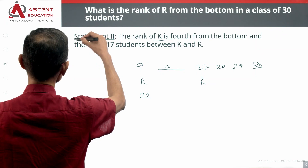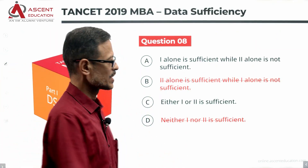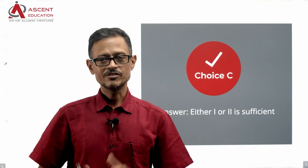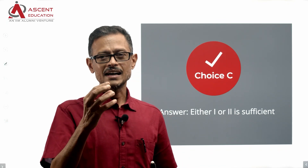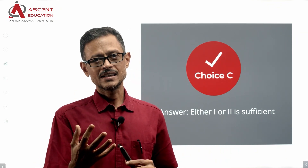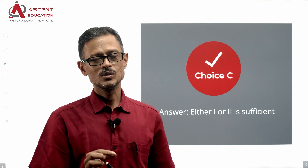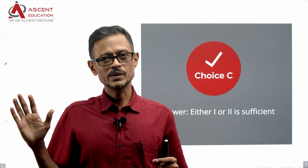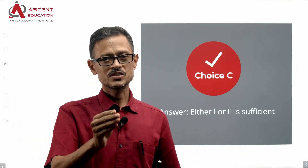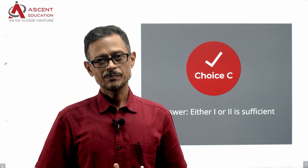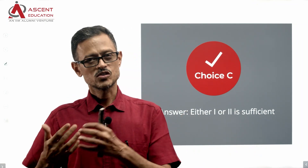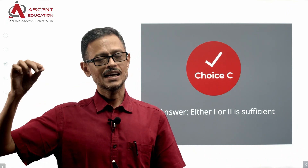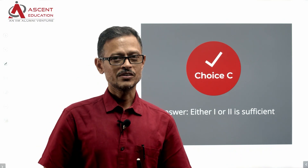So we can get the correct answer using statement two as well. Statement one is sufficient and statement two is sufficient. Therefore the correct answer is C — each statement, either one or two, is sufficient by itself. Get started with your TANCET preparation. Best wishes for it.